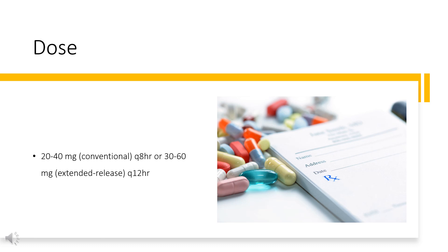Intravenous: 5 mg per hour by slow infusion (50 mL per hour) initially, may be increased by 2.5 mg per hour every 15 minutes, not to exceed 15 mg per hour.